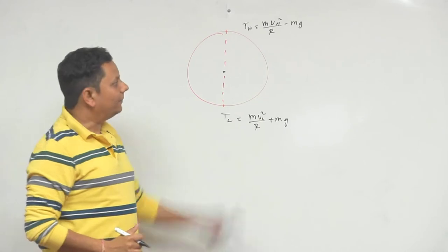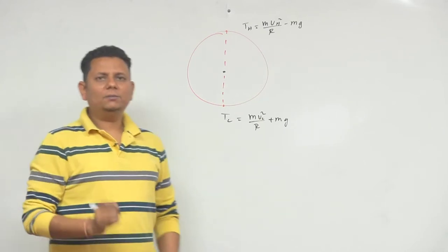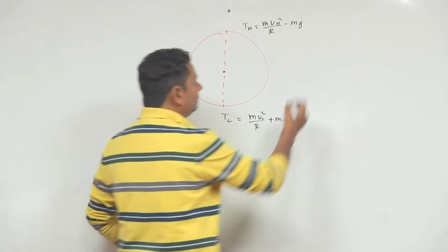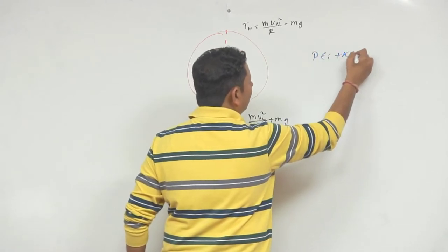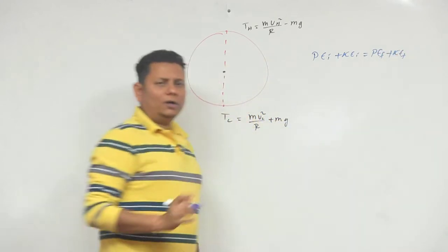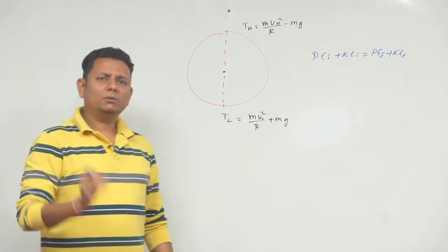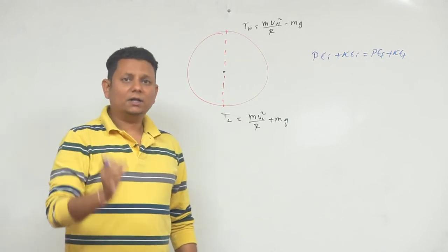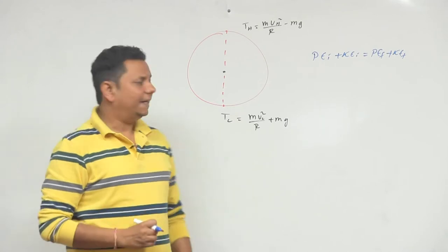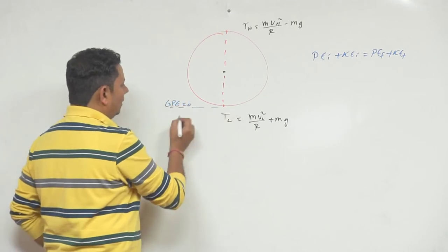इन दोनों tensions का ratio 4:1 दिया हुआ है। साथ ही work-energy theorem apply करते हैं। Potential energy initial + kinetic energy initial = potential energy final + kinetic energy final। Lowest point को initial और highest point को final मानके energy conservation लिखते हैं, क्योंकि work done by external force, pseudo force, और non-conservative forces सभी 0 हैं।